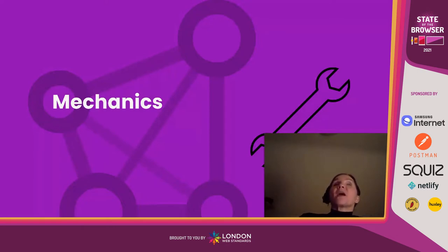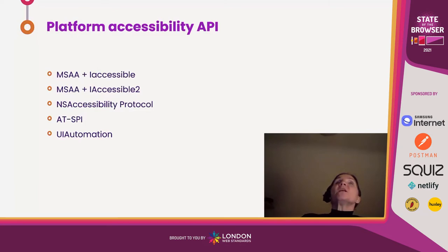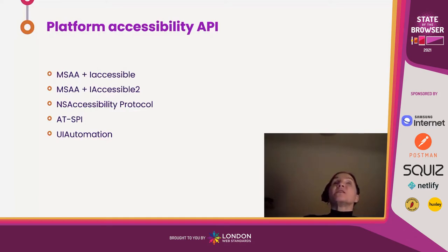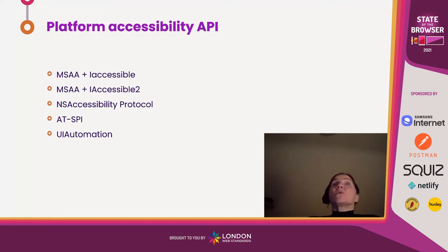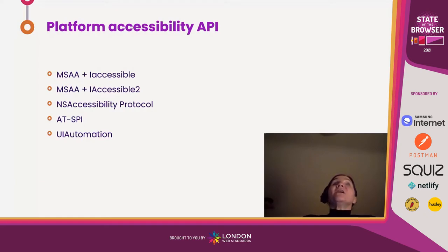Do bear in mind that screen readers are not the only assistive technologies. What is this browser mechanics — accessibility mechanics — that I keep talking about? Well, it begins with the idea of platform accessibility APIs. They exist on all platforms. On screen are some of the desktop and laptop operating system examples. It began with Microsoft Active Accessibility in 1997 that works through the iAccessible interface. Over the years we've gained iAccessible 2 which extends MSAA for Windows, and more recently UI Automation. On macOS we've got NS Accessibility Protocol, and Linux through the GNOME desktop has the ATSPI — or Assistive Technology Service Provider interface. They're also available on mobile platforms too, but the TL;DR is that all platforms have these accessibility APIs.